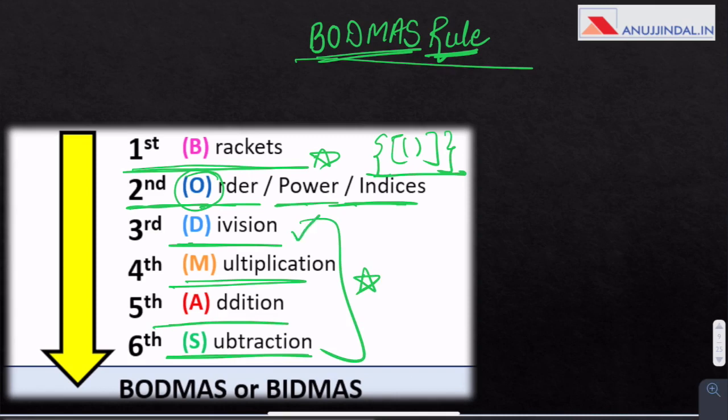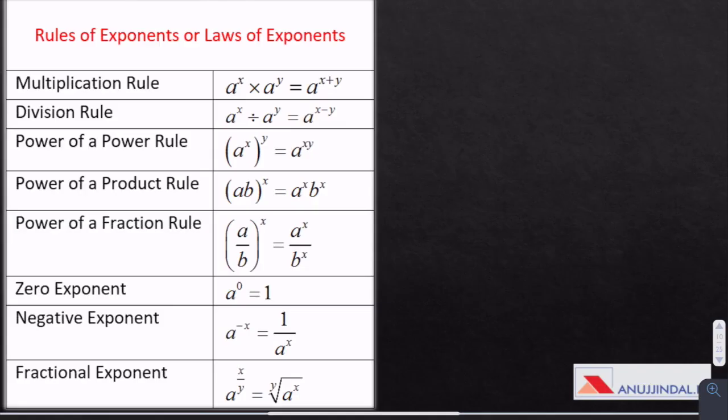This is very important. Division, multiplication, addition and then subtraction. And in simplification, a lot of variables and exponents are used. So here are few rules which would help you solving them.